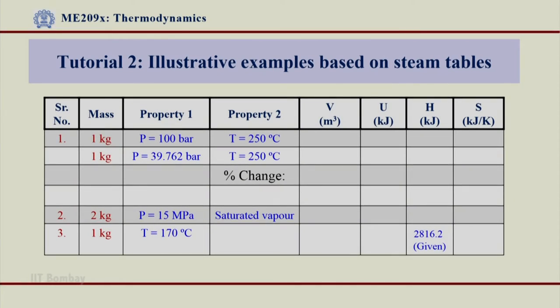After locating the region, we can now write the values in our answer sheet. This is the answer sheet and at P equals 100 bar, T equals 250 degree centigrade, I can write these values as what we have seen.